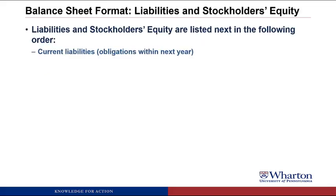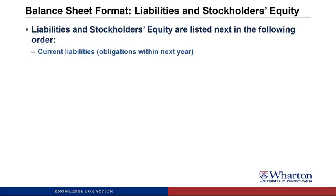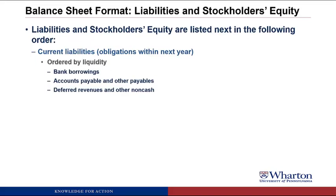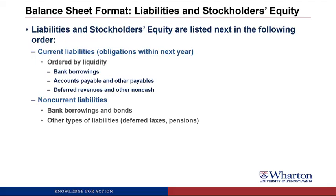Then come liabilities and stockholders' equity, starting with current liabilities — obligations within the next year, ordered by liquidity. So we'll see bank borrowings, accounts payables, other payables, and then deferred revenues and other non-cash current liabilities. Then we'll have non-current liabilities — those due beyond a year — such as longer-term bank borrowings and bonds, deferred taxes, and pensions. Then we have stockholders' equity, where we start with contributed capital: common stock, additional paid-in capital, treasury stock, and then retained earnings.